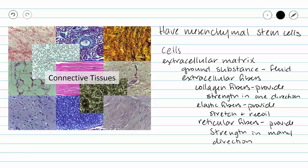Our collagen fibers generally stain pink, our elastic fibers generally stain dark purple, and our reticular fibers will stain either a dark brown-black or light blue.